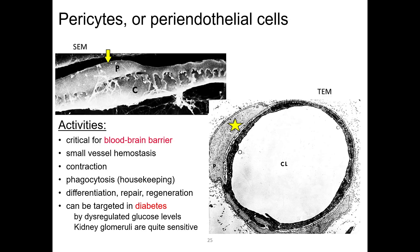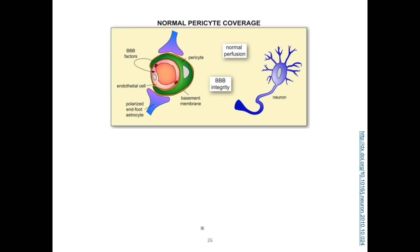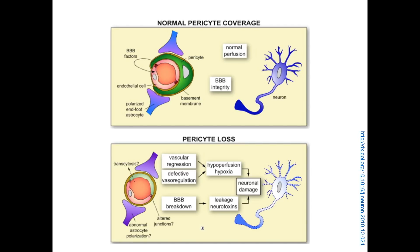Once thought to be merely supportive, we now know that pericytes have important and varied functions. For example, they're responsible for much of the integrity of the blood-brain barrier, and loss of pericytes is known to compromise this barrier. Here's a cartoon showing how pericytes normally cover capillary endothelial cells. They allow normal perfusion, but block insults or toxins that might damage neurons. If these cells are compromised or lost, this alters the blood-brain barrier and causes it to break down, resulting in damage to the neurons.